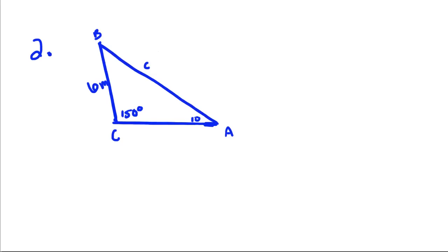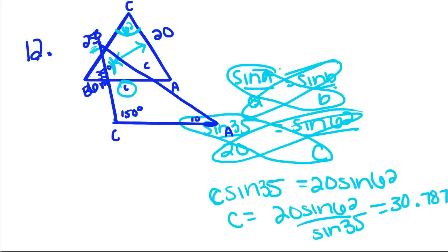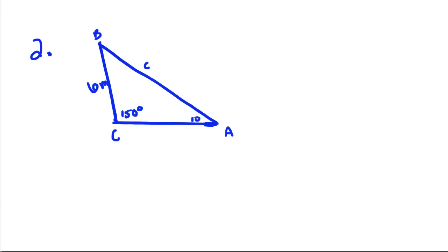So let's do another example. Okay, so we're trying to find C, and we know this angle and this side and this angle. So we're going to say sine of 10 over 6 is equal to sine of 150 over C.